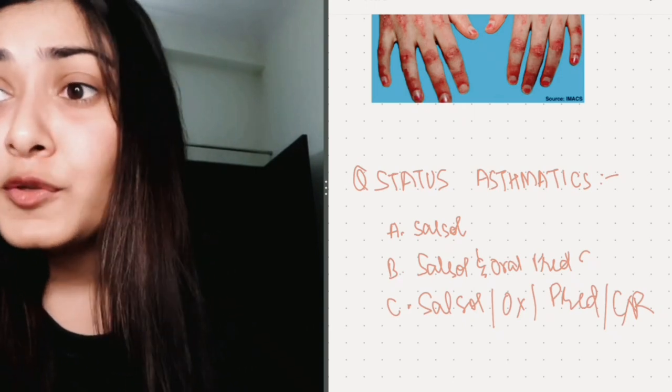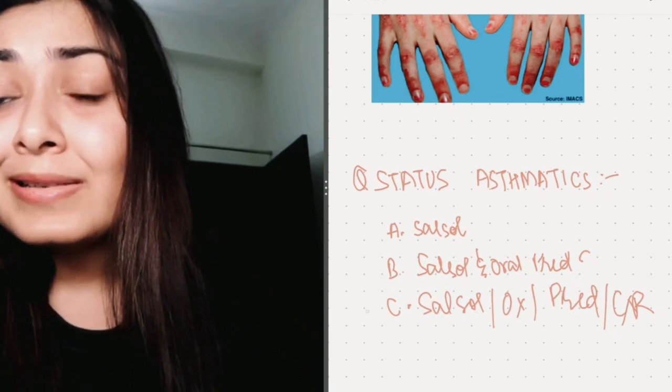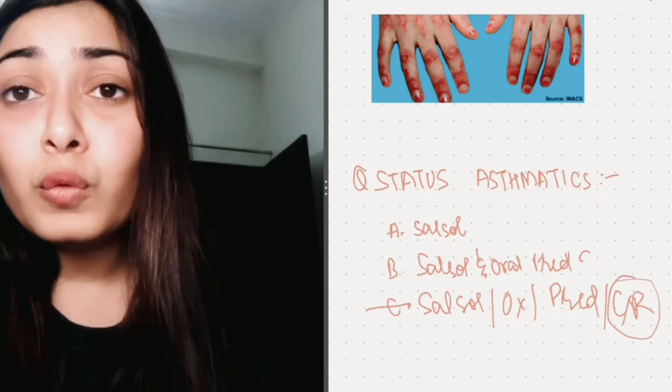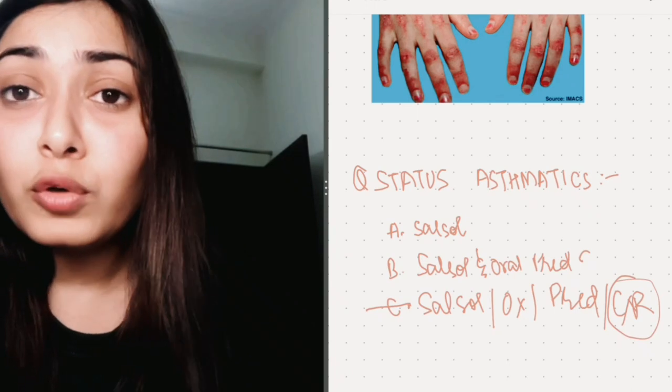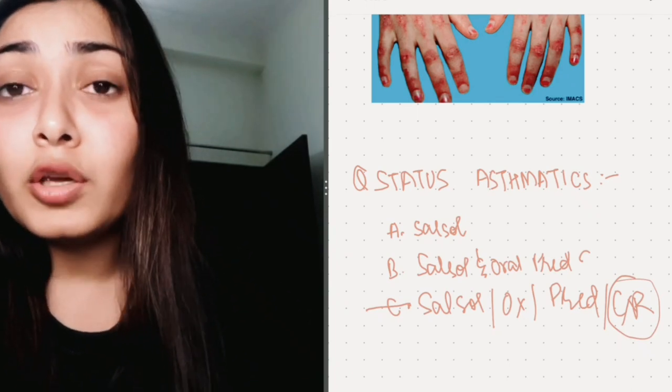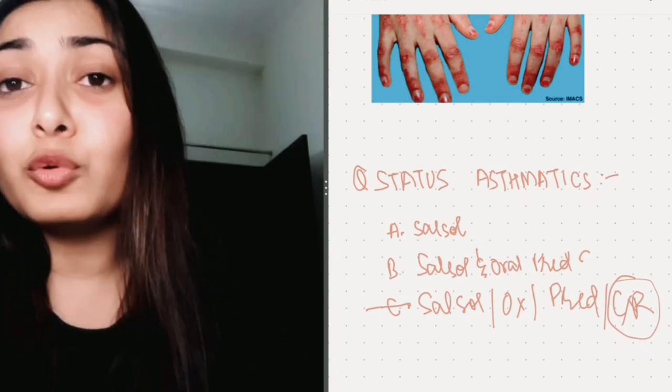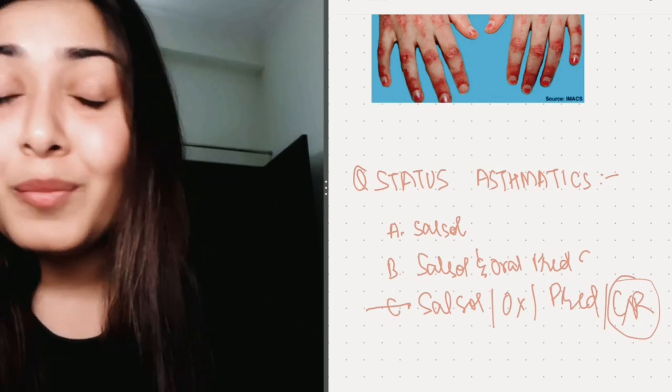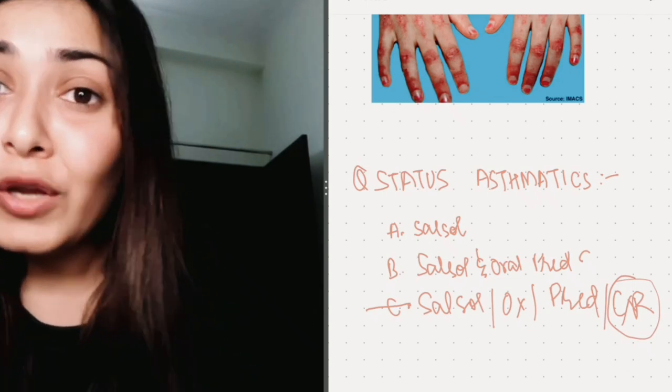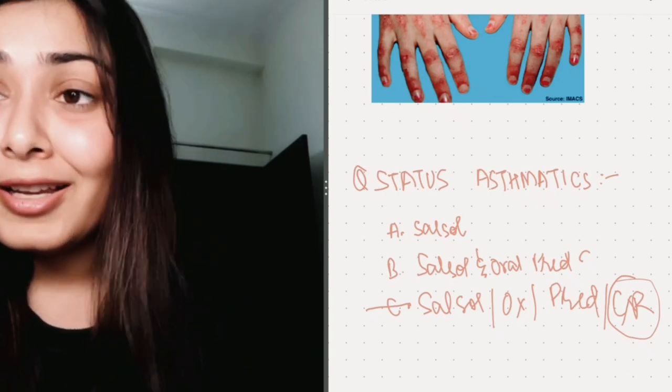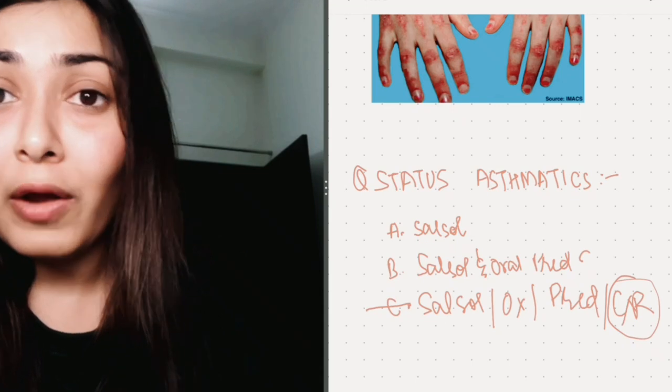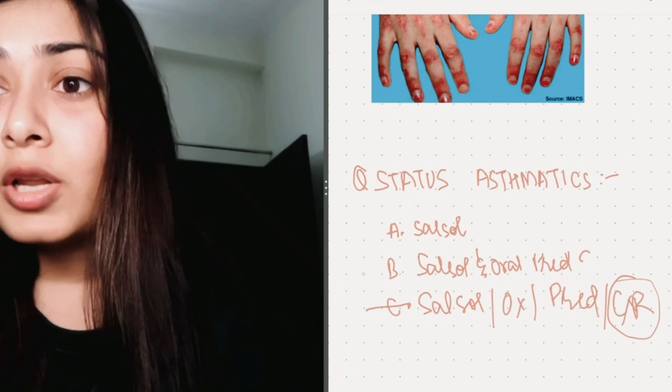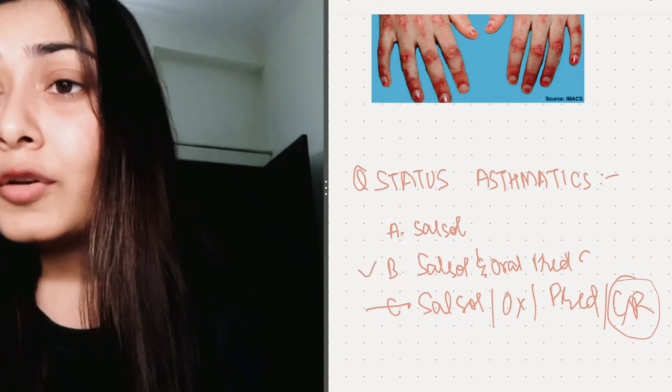So if the question asked that which of these you routinely require, you routinely need in your management, then you can easily exclude this option because chest x-ray we do not do routinely. We do it when, whenever there is the first episode or you are thinking of an alternative diagnosis, either pneumothorax or subcutaneous emphysema or the child is not improving by your basic management, right? So if the question seriously asked that what of these would you require routinely in the management, then you can easily exclude out this option and option B would be correct, right?